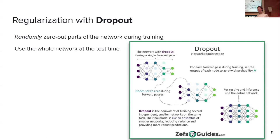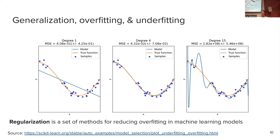Dropout has been shown to be a very effective way of regularizing neural networks and is still used today. How many weights to zero out at each iteration is yet another hyperparameter. Is it clear what overfitting, underfitting, and generalization are? This is an incredibly important concept in machine learning.